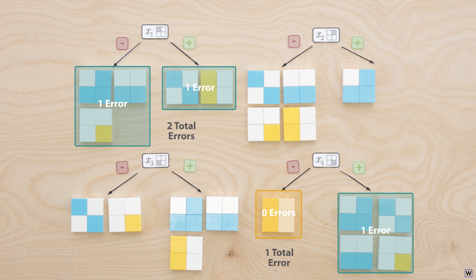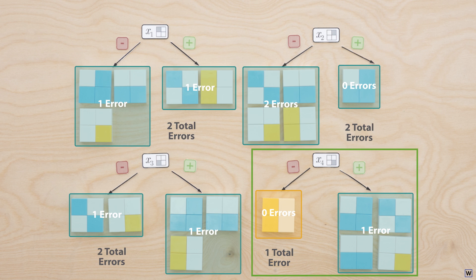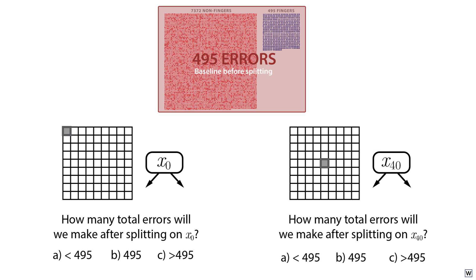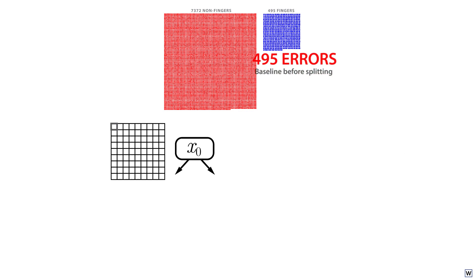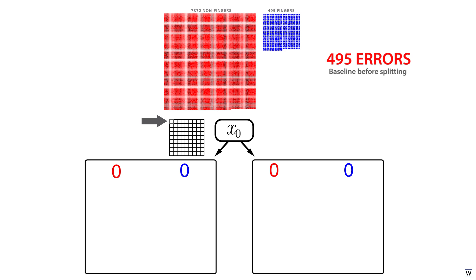At each level, we decided to choose the split that made the fewest misclassification errors on our training data. Let's split our data on the variable x0. So all our examples that have a value of 0 in this upper left position will move into our left node.